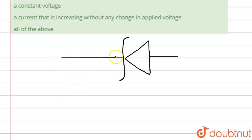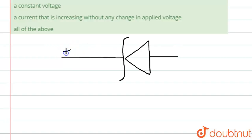Why is it connected in reverse bias? Reverse bias means the side connected will be negative. Normally in a diode, current flows through it, but in this case the positive end is connected on one side and the negative end on the other. In a normal diode, we connect the positive end on one side and the negative end on the other.